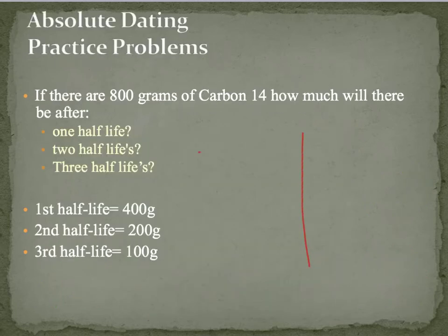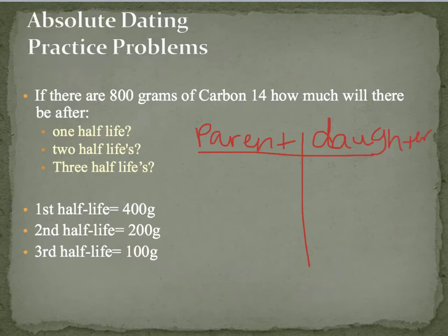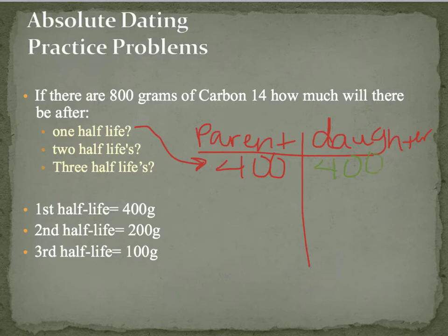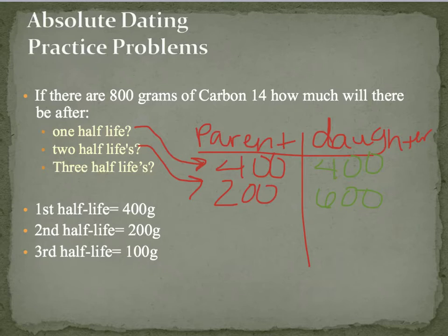Let's do another example using a chart with parent on one side and daughter or decay product on the other. Starting with 800 grams: after one half-life, half of 800 is 400 parent, so we have 400 daughter. After two half-lives, we have 200 parent and 600 daughter. After three half-lives, we have 100 parent and 700 daughter.